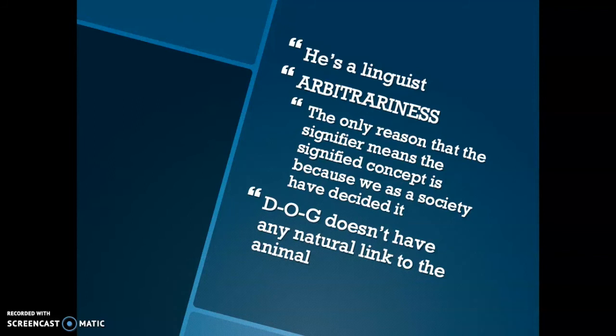The word DOG doesn't mean anything by itself — it doesn't have any natural linkage to the concept of the animal dog. But the reason why we understand that the word DOG means that four-legged animal is because as a society we have decided it. If you go to America and tell someone you have a pet dog, but say 'mere paas ek kutta hai,' they will not understand, because language is defined by the people who are speaking it. So as a society we have decided the rules of this language.